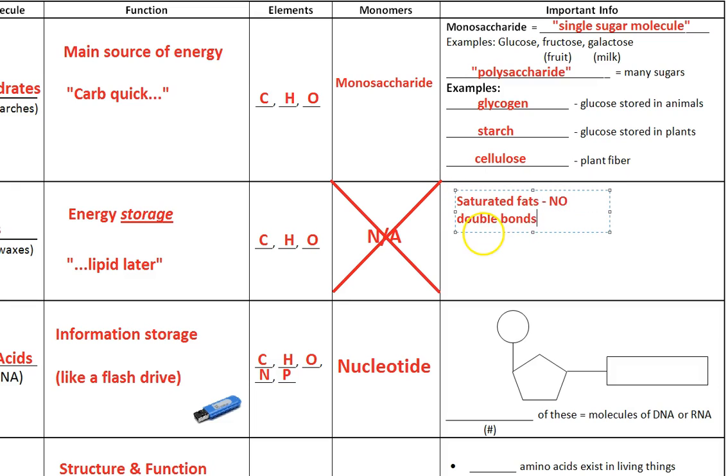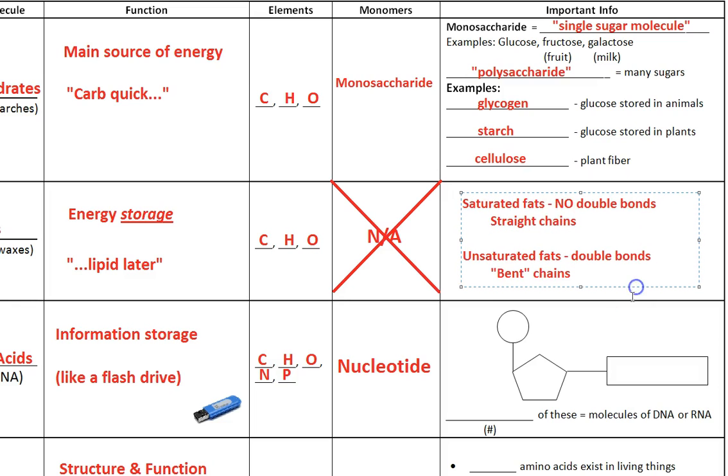Now, we've got saturated and unsaturated fats. A saturated fat does not have double bonds. It's got straight chains. An unsaturated fat does have double bonds, and those are bent chains. I'll show you more on those in just a second.